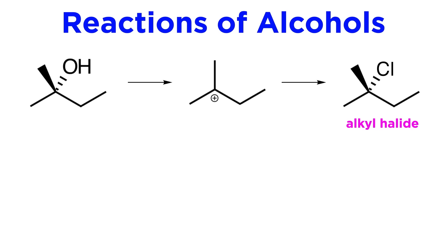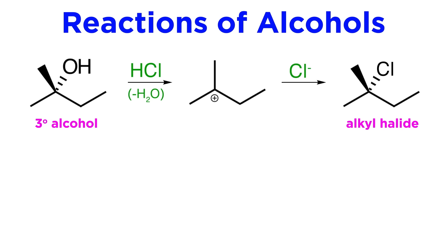First, alcohols can be converted into alkyl halides. This can happen a few different ways. If it's a tertiary alcohol, treating with HCl or HBr will protonate the hydroxyl, causing water to leave, and then the resulting halide ion can coordinate to the carbocation intermediate, generating the tertiary alkyl halide.